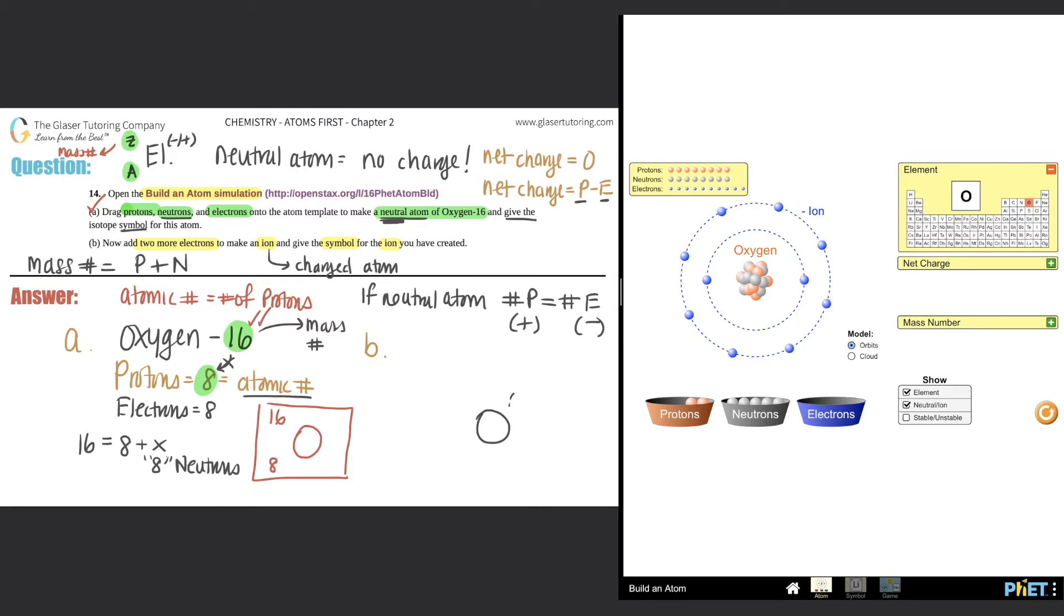The atomic number should not change. The number down here shouldn't change because we didn't do anything with the protons, so the 8 should stay here. The 16, that has nothing to do with electrons, so that shouldn't change. This is still a 16 up top here. The only thing that should change is the charge.